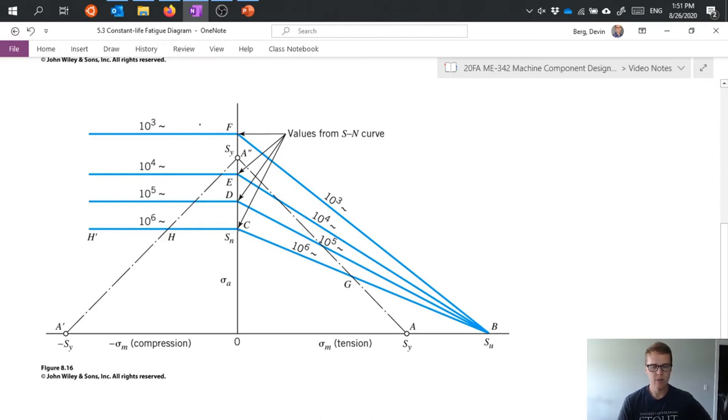So anything there and above would be our endurance limit. I've plotted those here and said that those values slope down towards the ultimate strength on this tension side of the mean stress. And that gives me this converging plot of blue lines that all meet at the ultimate strength.